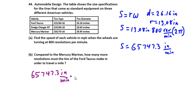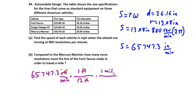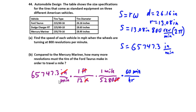To cancel out inches, we multiply by 1 foot per 12 inches — the inches cancel, leaving feet per minute. Then to convert feet to miles, we multiply by 1 mile per 5,280 feet — the feet cancel. Finally, to convert minutes to hours, we multiply by 60 minutes per hour.